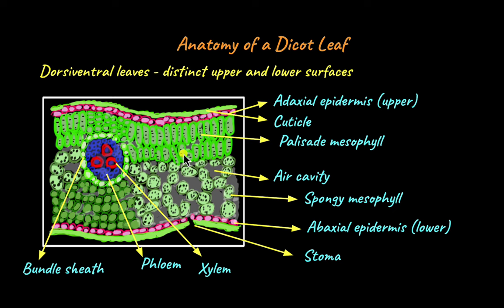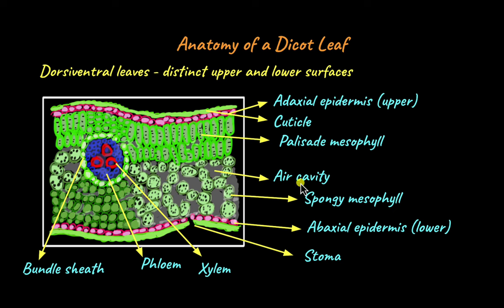Below the palisade mesophyll cells are the spongy mesophyll cells, and these spongy mesophyll cells are located close to the lower epidermis, which is called the abaxial epidermis. The adaxial epidermis is the upper surface and the abaxial epidermis is the lower surface. The mesophyll cells located close to the abaxial surface are called spongy mesophyll cells, and these cells have a lot of intercellular space or air cavities in between them. They are not as closely packed as the palisade mesophyll cells.